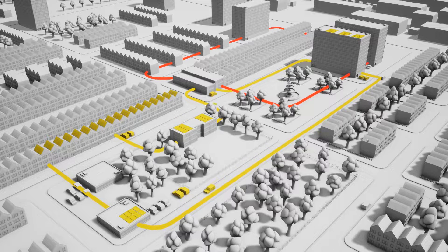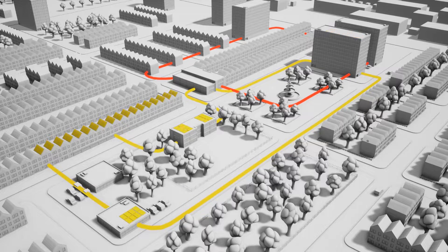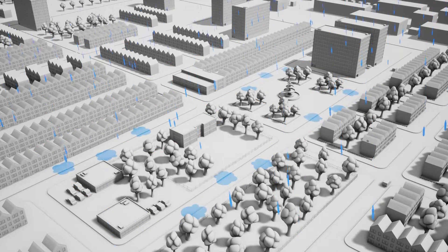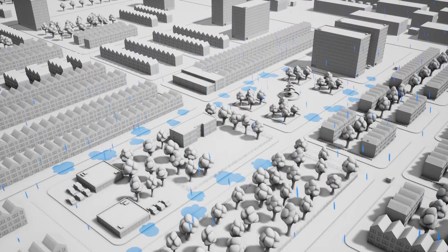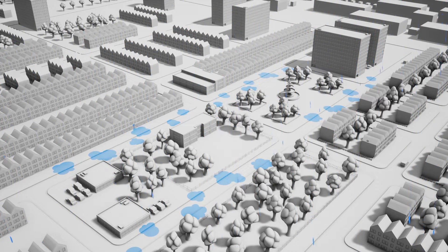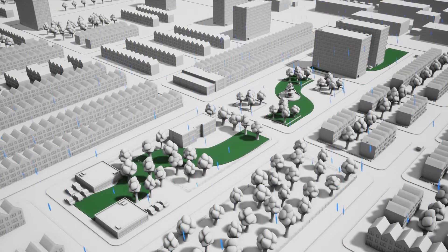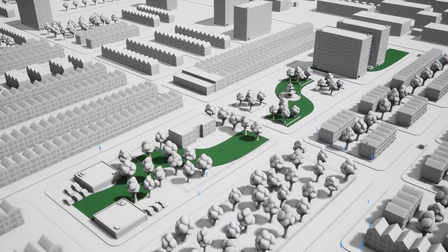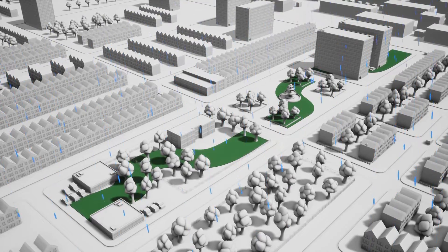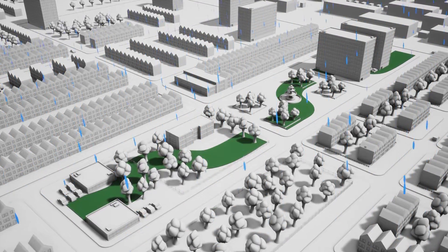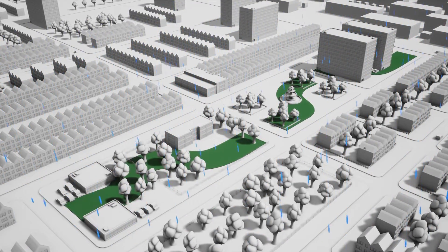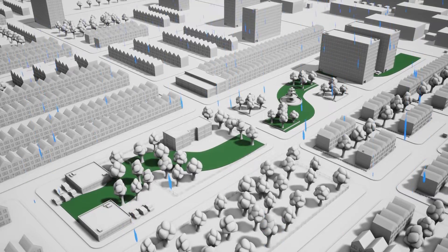Waste heat from offices or supermarkets could be used for heating apartments. For rainwater, a whole range of improvements can be found. Permeable pavement can allow rainwater to infiltrate. So-called bioswales can be used to collect, contain, and slowly release rainwater during heavy rainfalls. And of course, water can be directed to parks to allow infiltration there.